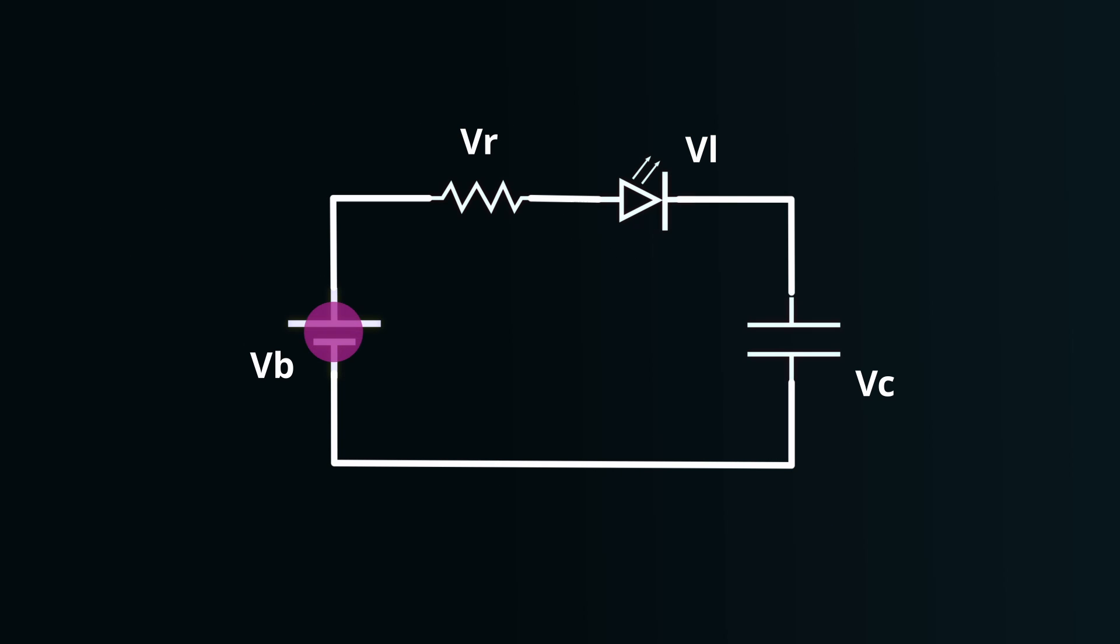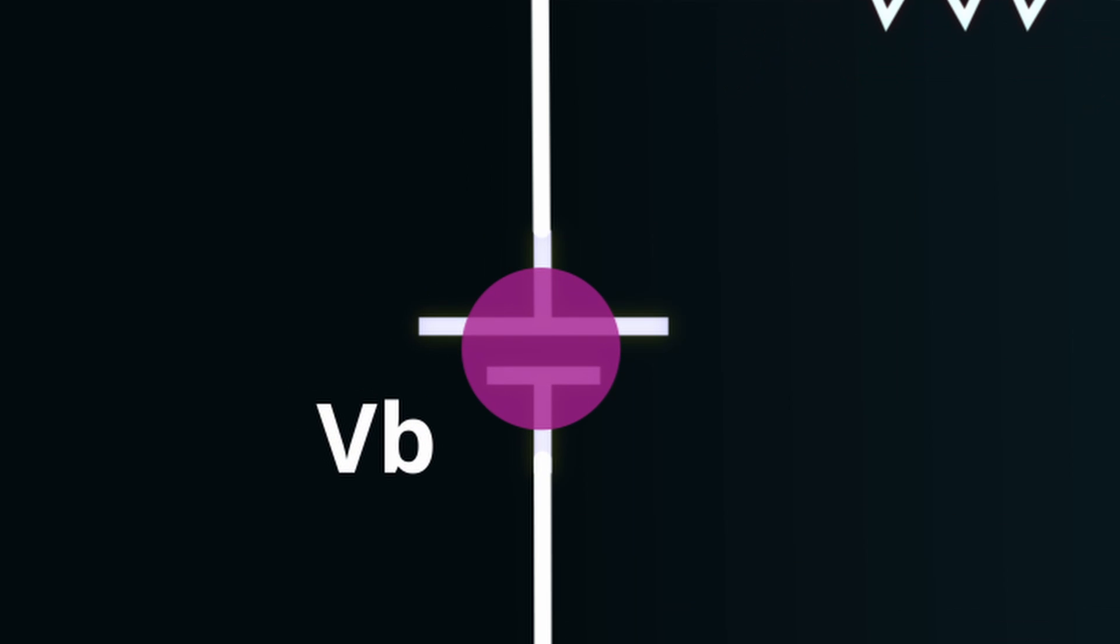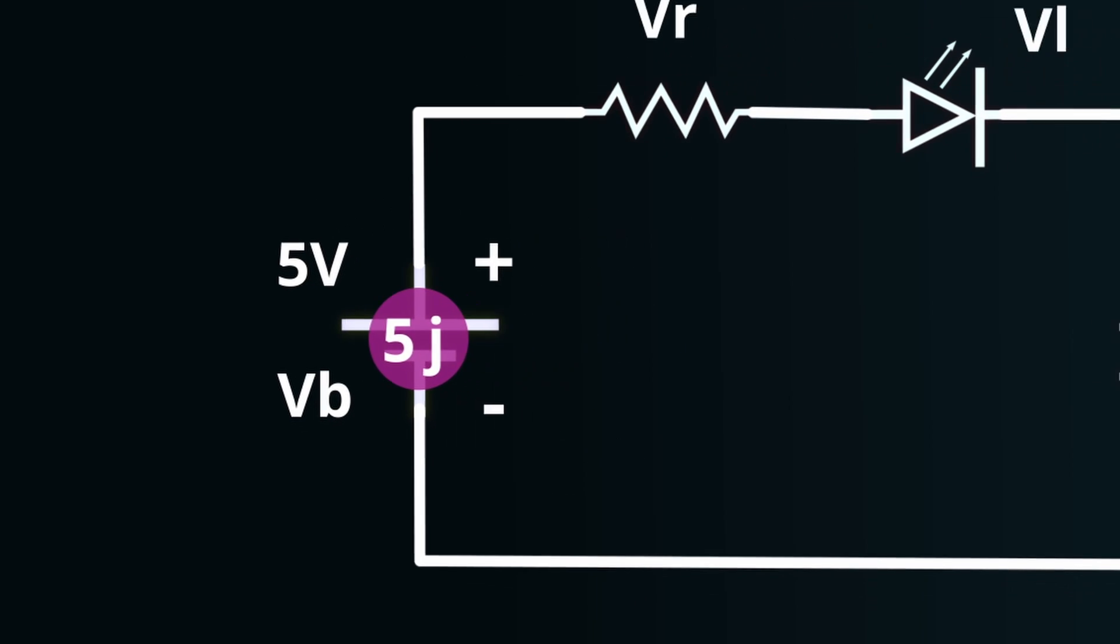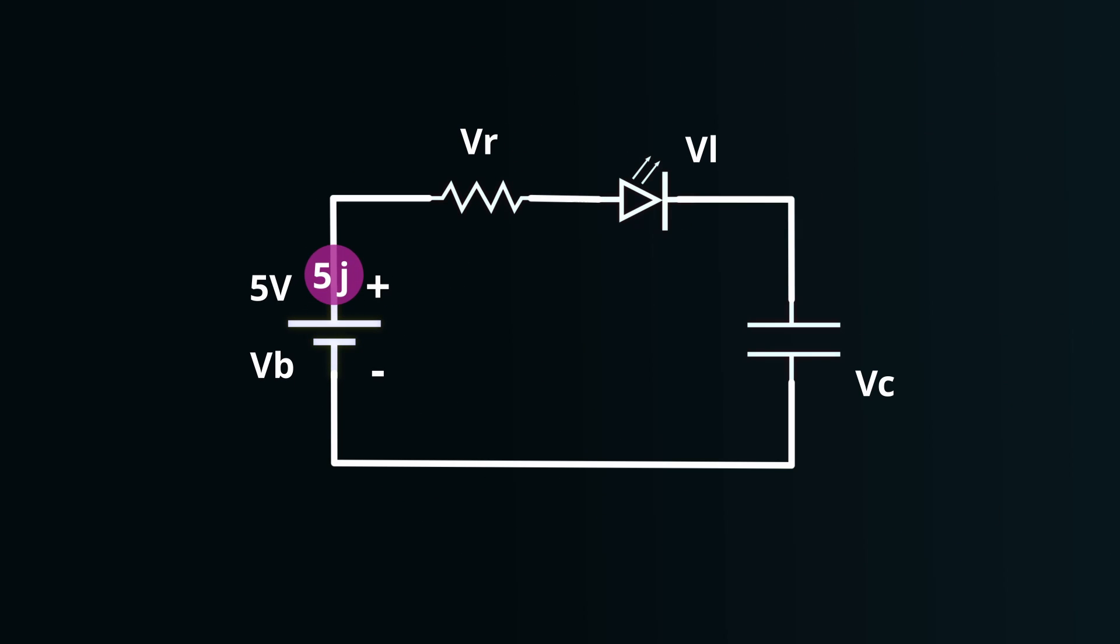Consider an individual charge situated at our battery. This battery is rated at 5 volts, which essentially means the charge is endowed with an energy of 5 joules. Now, as this charge embarks on its journey around the circuit loop, it first confronts the resistor.